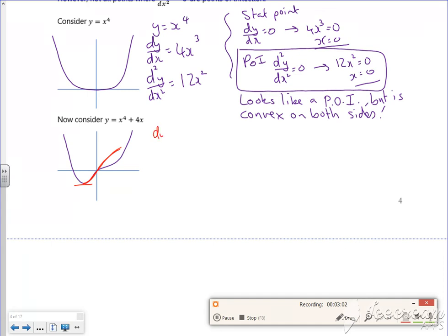So if I do dy by dx, that's 4x cubed plus 4. So for my stationary point, for the 4x cubed plus 4 is zero. That'll give me x is minus 1, which is over here minus 1.